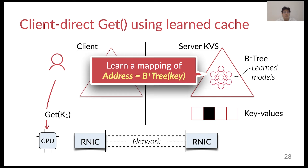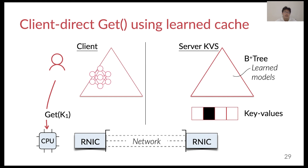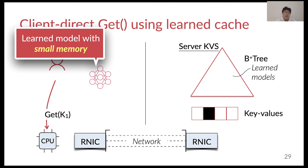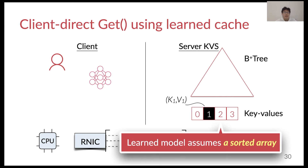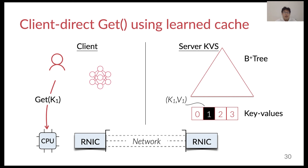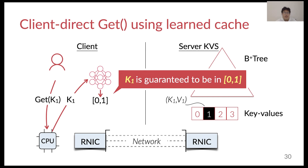So let's look at how we use the learned model as a cache to accelerate client-side key-value operations using one-sided RDMA. First, we train the models to learn a mapping from the keys to the value addresses at the server. The learned models, which have small memory usage, are then transferred from the server to the client. Given the learned models, the client can use them to look up a given key. Note that the learned model assumes that the key values are stored in a sorted array. Suppose we want to find the address of k1 at the server — we first use the learned models to predict the possible locations of k1. In this example, it returns that k1 is at location 0 or 1.